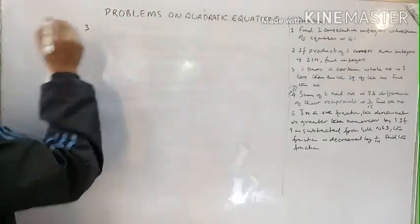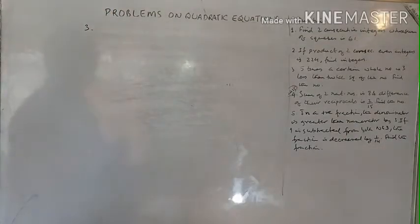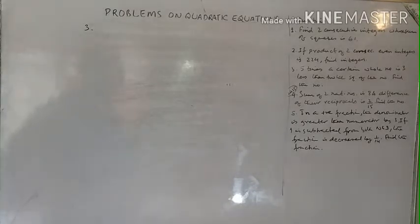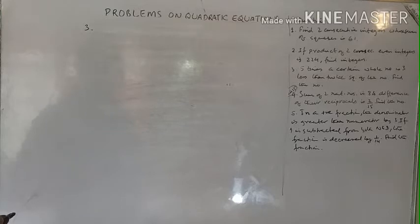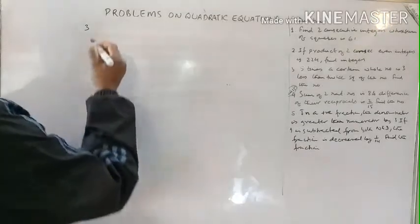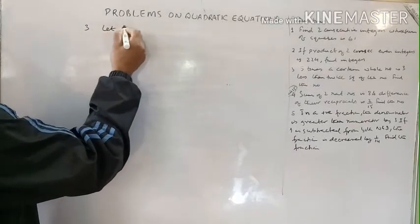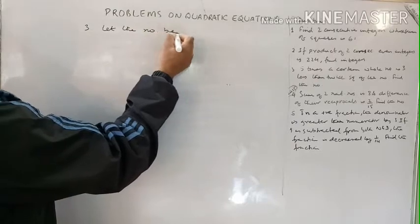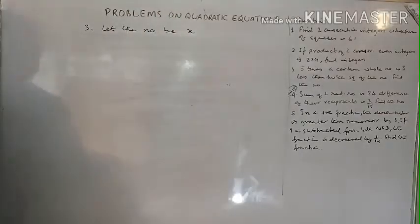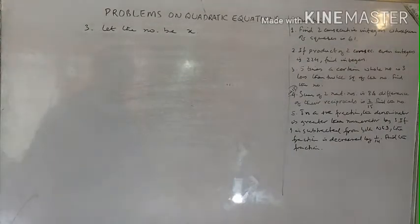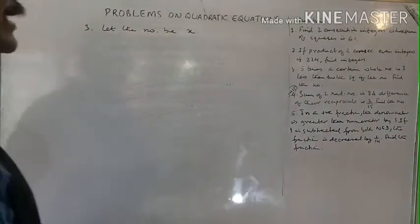Question number three: five times a certain whole number is three less than twice the square of the number. Find the number. Remember, whole numbers cannot be negative. Since only one number is to be found, let the number be x.